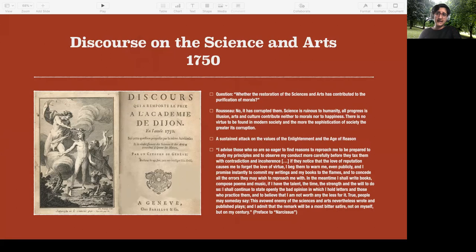So this was the discourse on the science and the arts, which he wrote in 1750, as part of this essay competition from the Académie de Dijon, where they had posed a question which was whether the restoration of the science and the arts has contributed to the purification of morals. So this was a question, very enlightenment sort of a question, which basically is like, have the sciences and the arts and the restoration. I think that's exaggerating it a bit, but okay.